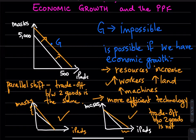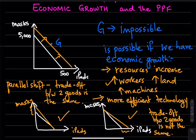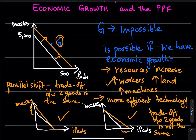In these two cases, the trade-off between the two goods is not the same with the improvement in technology. Going back to point G — we can also achieve point G through international trade, and the entire Chapter 3 is devoted to that.